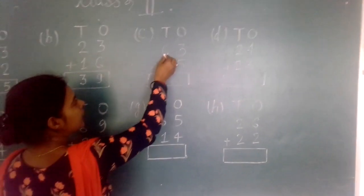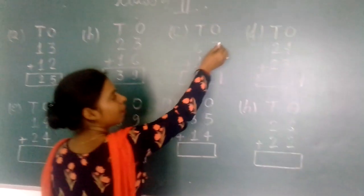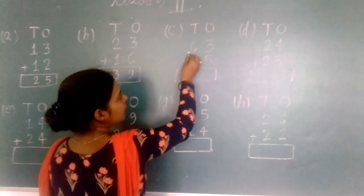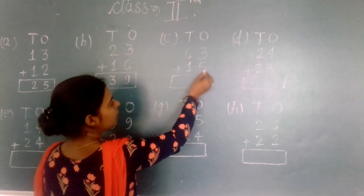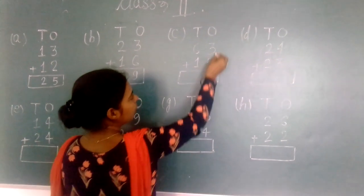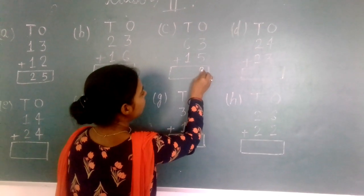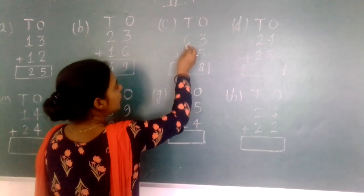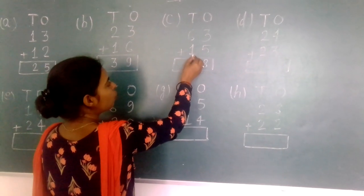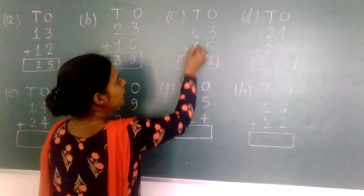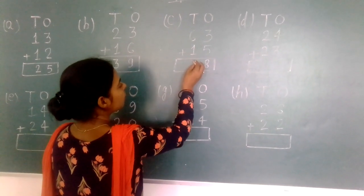Next: six tens, three ones (63) plus one ten, five ones (15). Three plus five equals eight. Six tens plus one ten equals seven tens. The answer is seventy-eight.